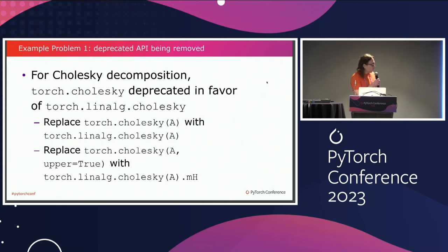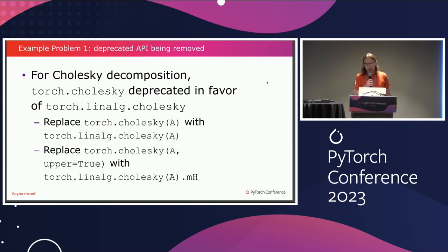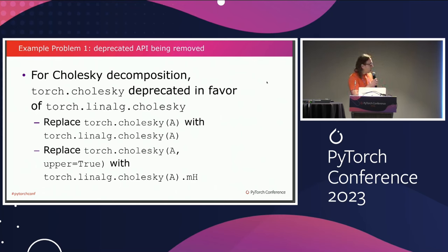First I want to show you several examples of the problems we are trying to solve. In this first example, the PyTorch API to compute Cholesky decomposition was recently changed. The function was moved from torch.cholesky to torch.linalg.cholesky and parameters were also changed. In the old API you could provide upper equals true, but in the new API you just compute the adjoint instead. We want to update our code to use this new API, but doing this manually is extremely tedious.